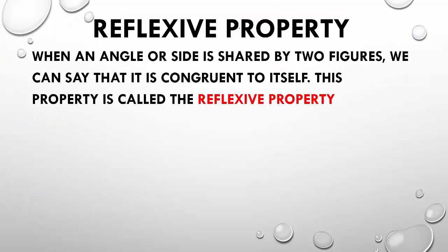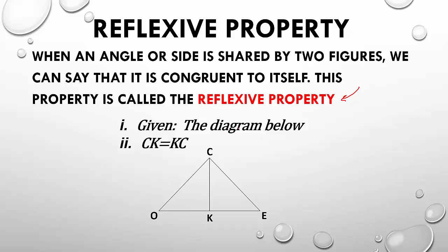Alright, so now, when we're talking about Reflexive Property, so, that's when an angle or side is shared by two figures, we can say that it's congruent to itself. So, this property is the Reflexive Property. So, make sure you know that along with Transitive Property. So, like, for example, if we're given the diagram below,